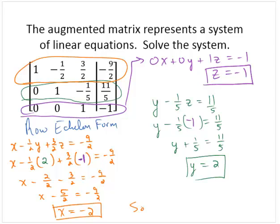So then the solution is the ordered triple negative 2, 2, negative 1.